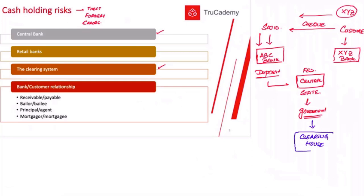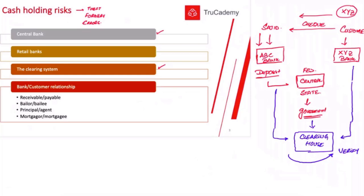My bank, ABC Bank, will take the XYZ Bank check and go to the central bank's clearinghouse. On the same day, XYZ Bank's representative will also come to the clearinghouse. ABC Bank will give the check to XYZ Bank. They will take it, go back to their bank, and verify whether the customer has enough money in their account. After verification, they will deduct the money from my customer's bank account.